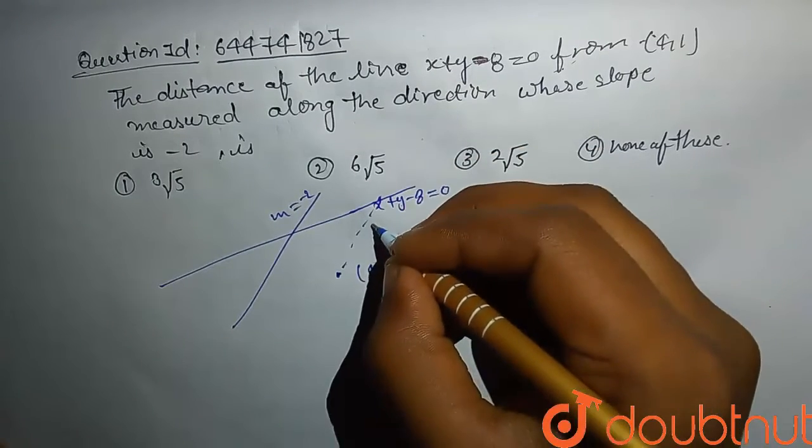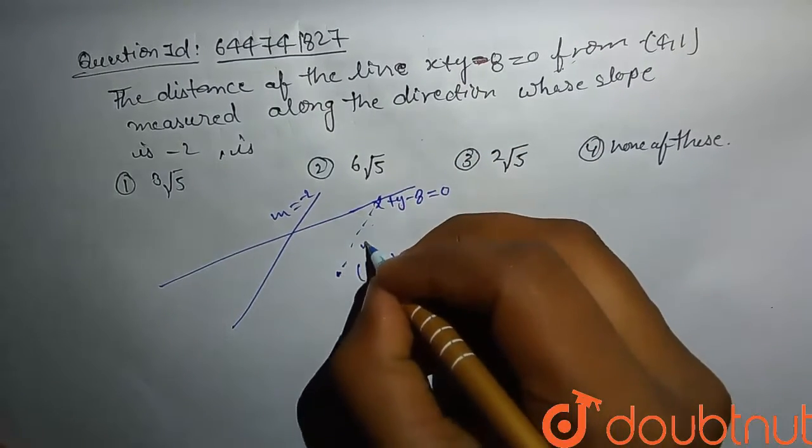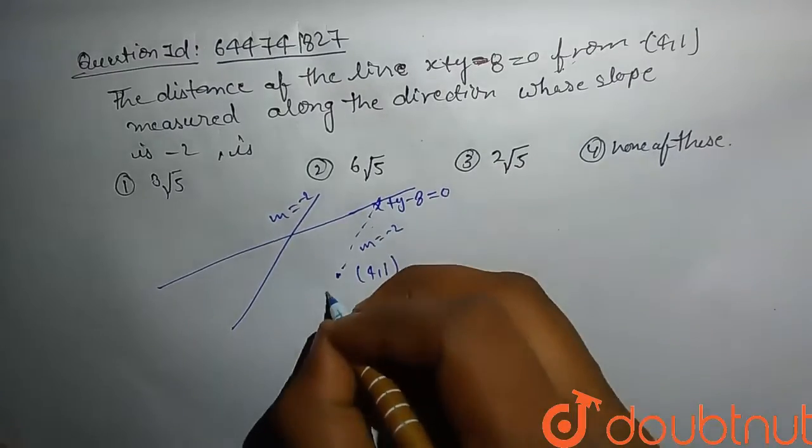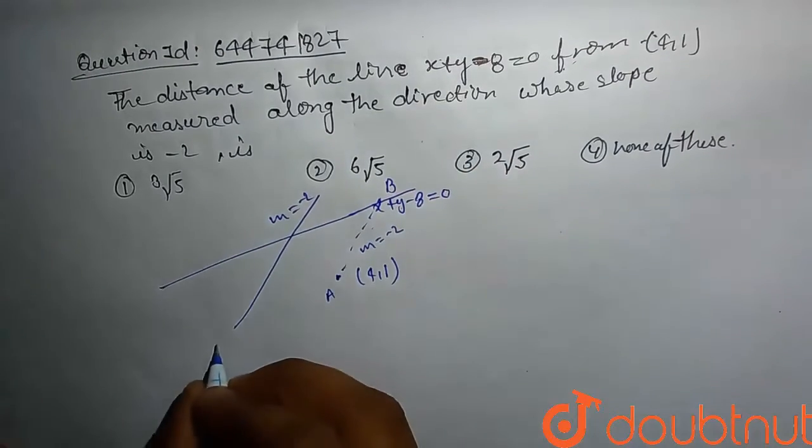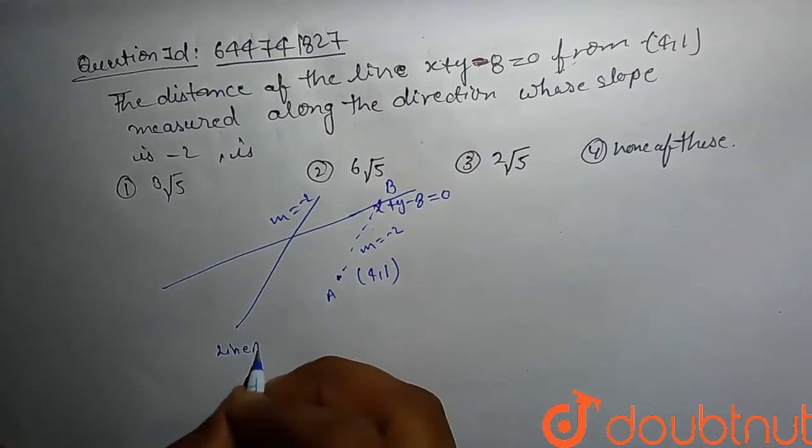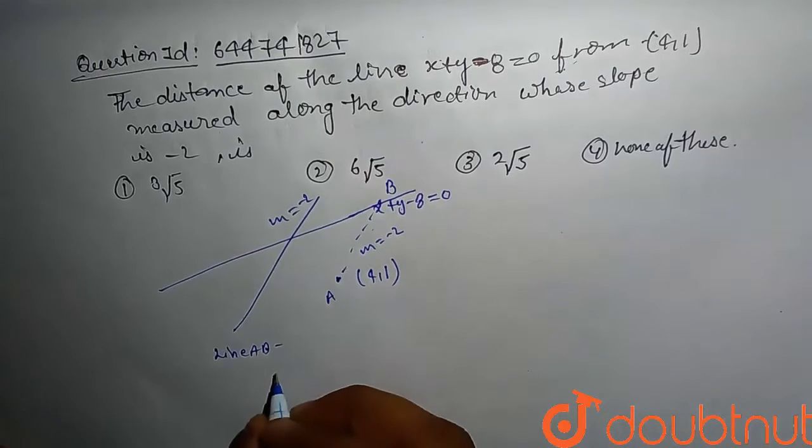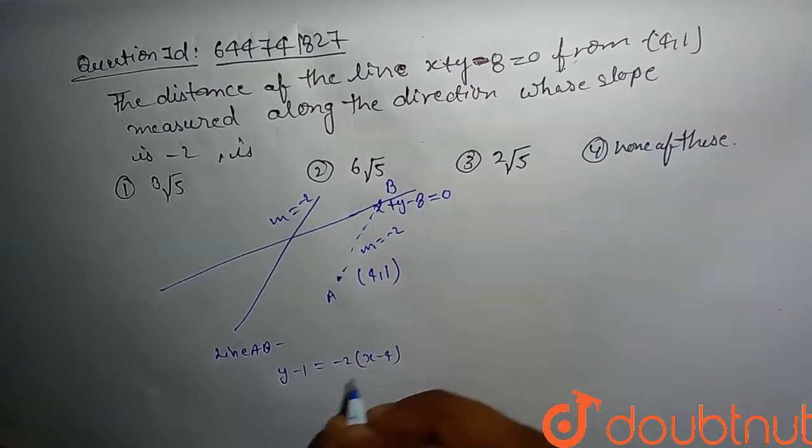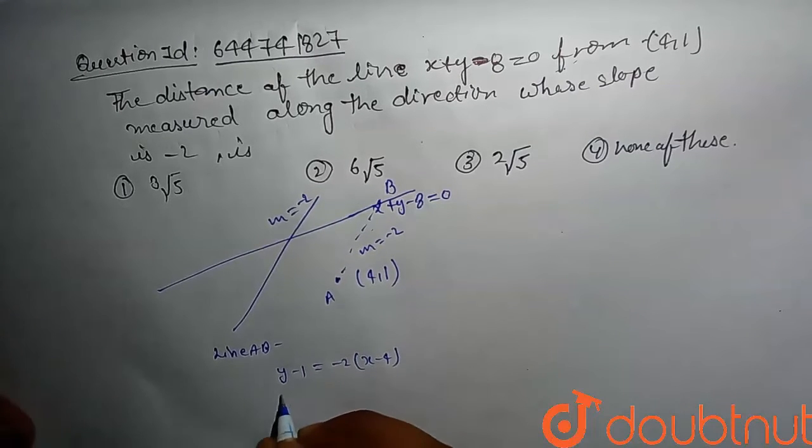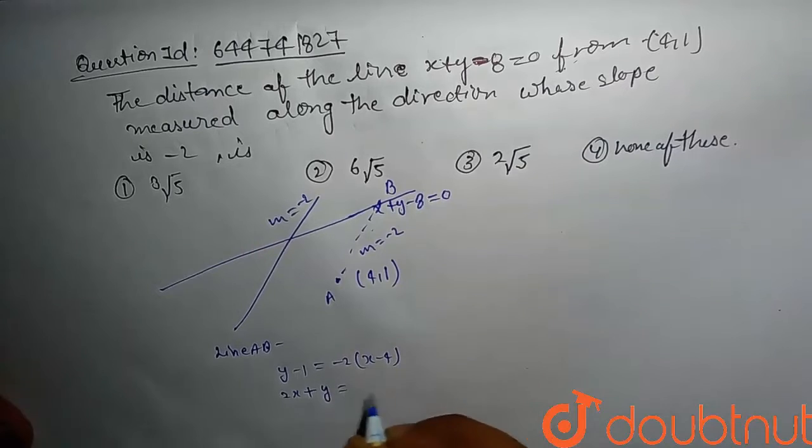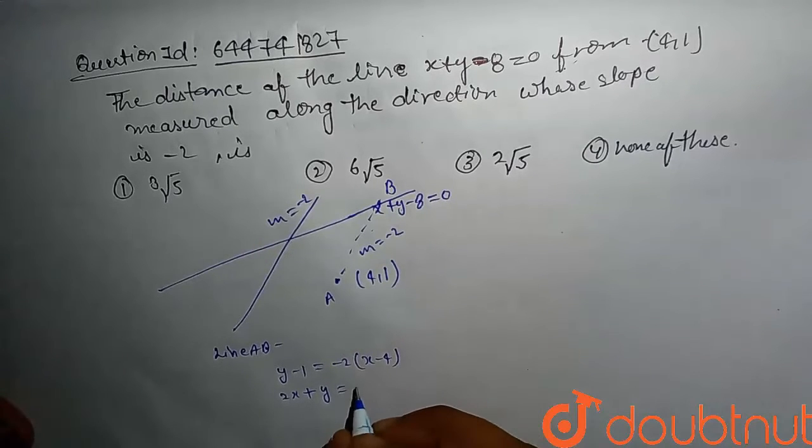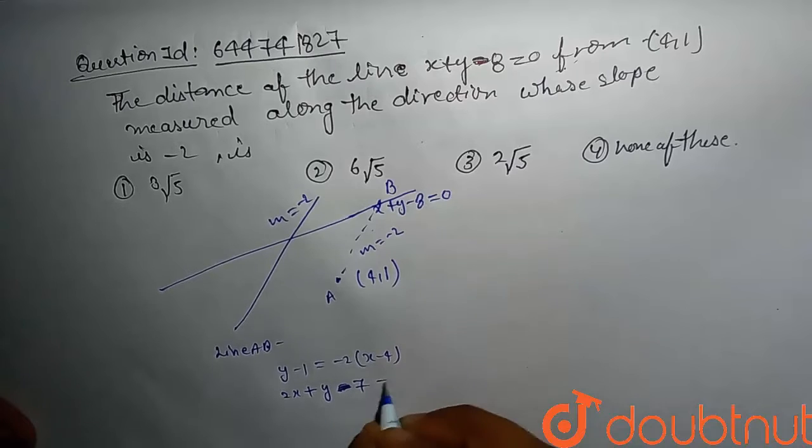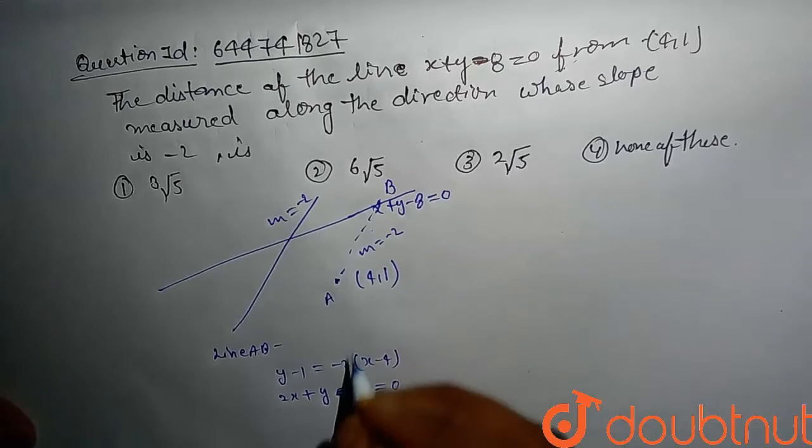That line also has slope minus 2. We have point and we have slope, so let's write equation of this line AB. Then line AB is y minus 1 equals minus 2 times (x minus 4). That comes 2x plus y equals 7, or 2x plus y minus 7 equals 0. This is our line AB.